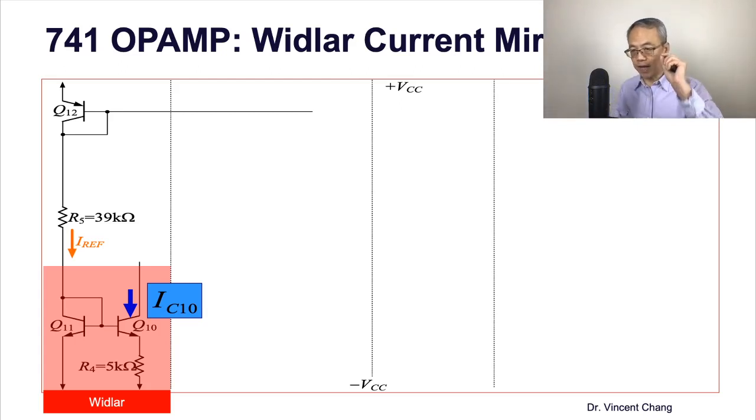IC10 will be much smaller than the IREF. The data I just asked you to put down on your node two minutes ago, it's actually the data here. Let me repeat that. The reference current is 0.73 milliamp. You can double check.